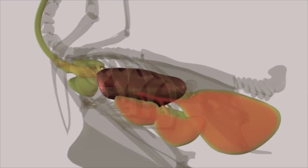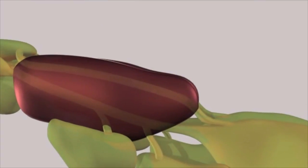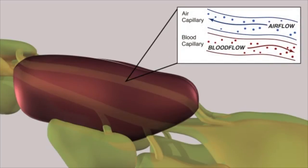As the bird exhales, the abdomen contracts, forcing the air out of the abdominal sacs and into the lungs. Within the lungs, the air passes through the parabronchi and eventually through the air capillaries. It is only here where the exchange of carbon dioxide and oxygen occurs.